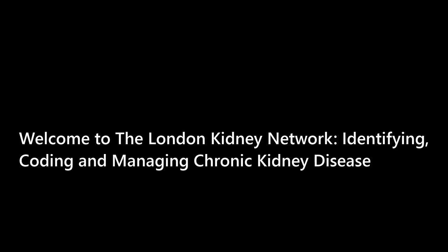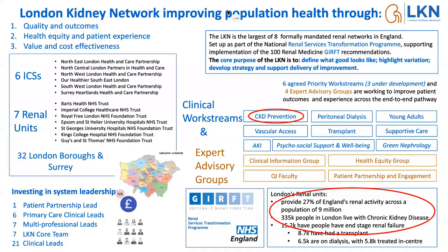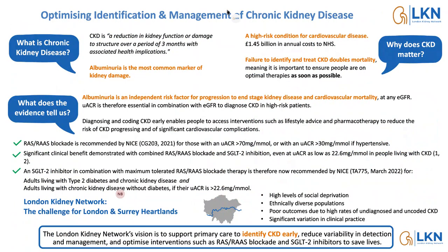Living with chronic kidney disease shows the scale of the problem. In terms of optimizing and identifying chronic kidney disease, CKD is a reduction in kidney function or damage sustained over a three-month period. A strong focus through this talk will be on urine and albuminuria as a very common marker of kidney damage.